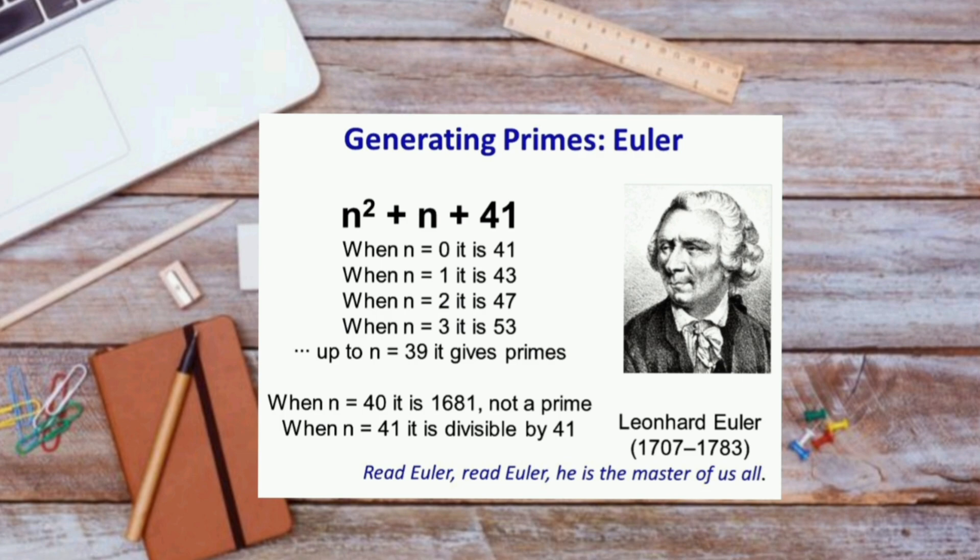This formula is pretty awesome. If you plug in any whole number for n, like 0, 1, 2, or 3, you'll get a prime number. For example, when n equals 0, the result is 41, which is prime. When n equals 1, the result is 43, also prime. When n equals 2, the result is 47, still prime.